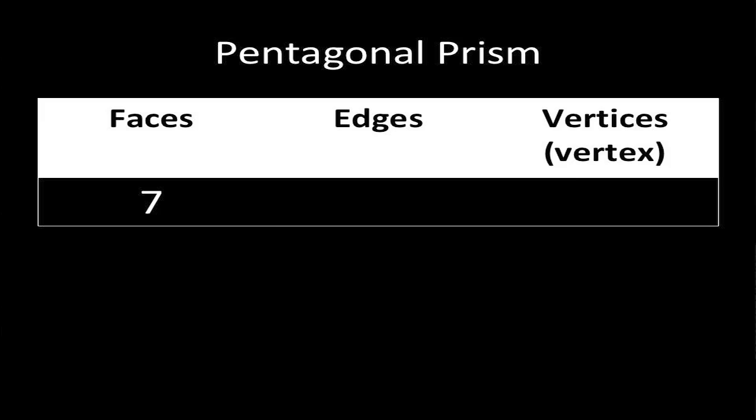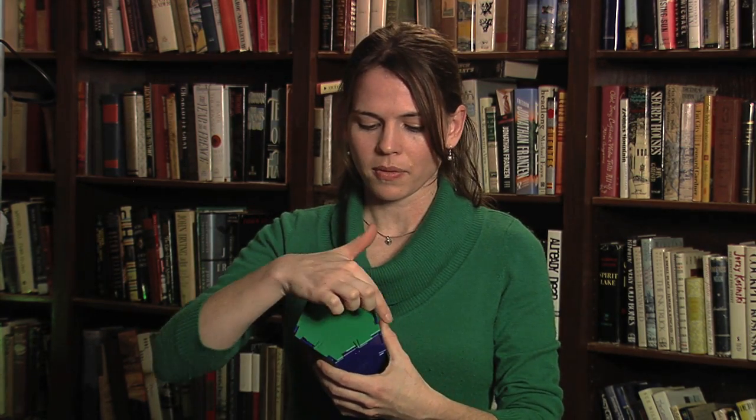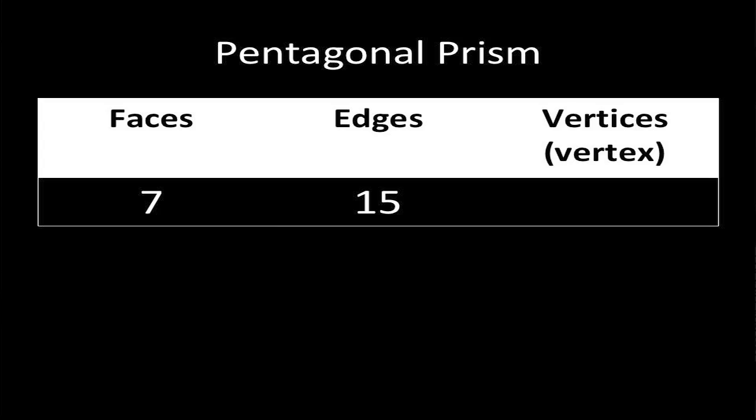The edge is the place where two faces meet. There are five edges around the prism, five more edges around the top base, and five more edges around the bottom base, for a total of 15 edges on a pentagonal prism.